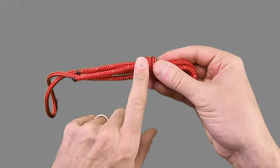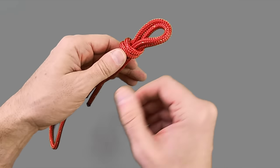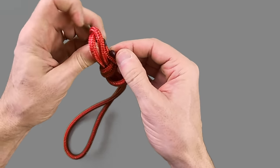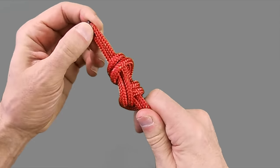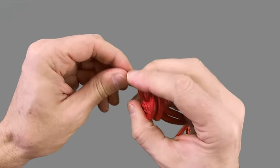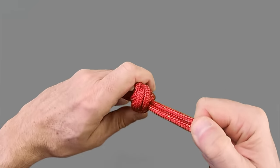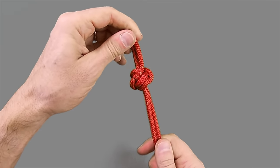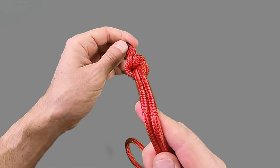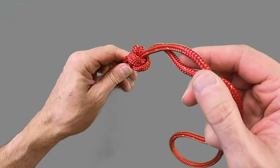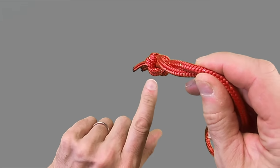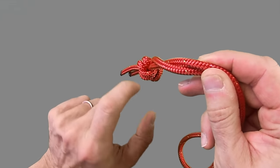You'll see here that the Ashley stopper knot utilizes three loops around the main lines to create that square finish which enhances the breaking strain of your soft shackle.